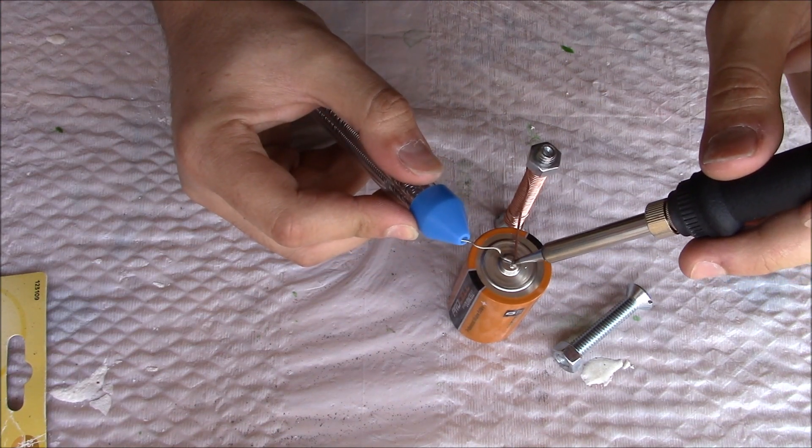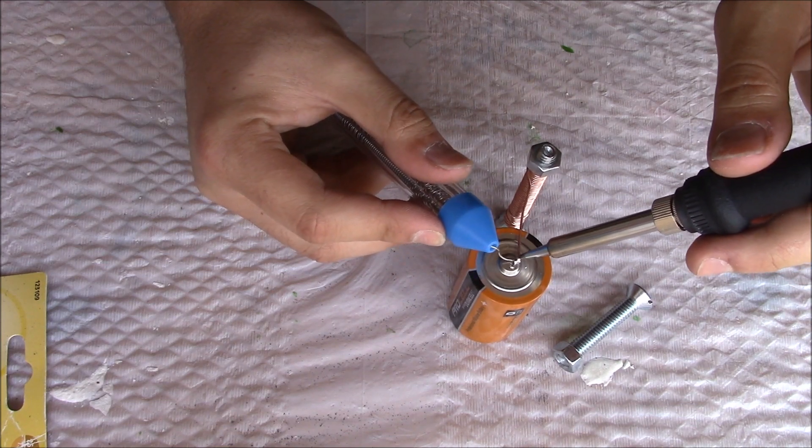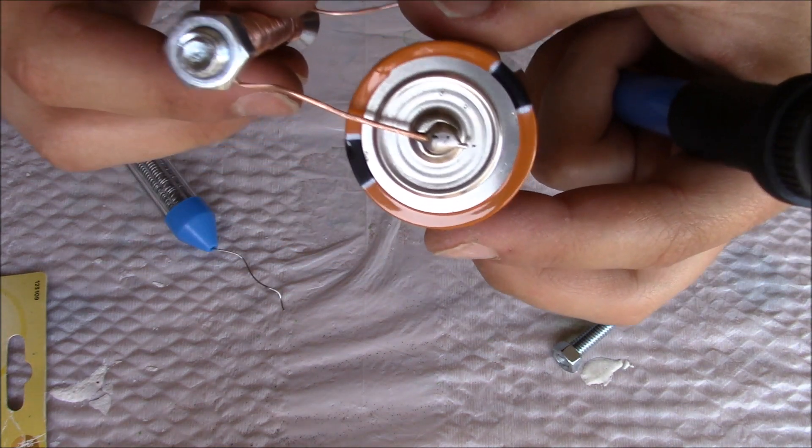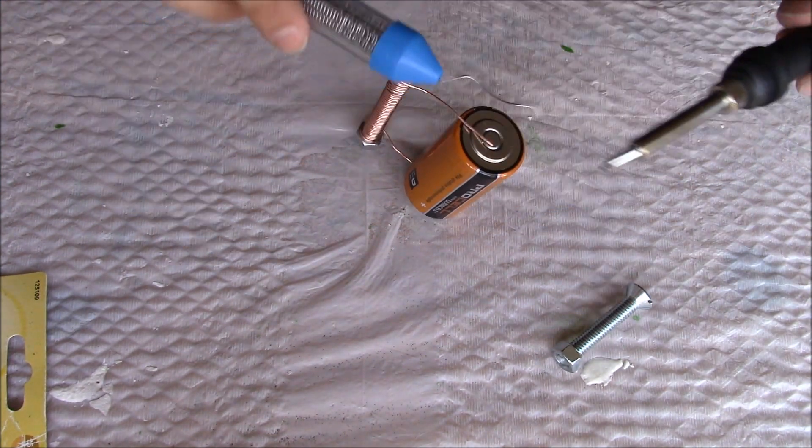Now we will solder both ends of the coil that we just made to both sides of the battery so we can get good conductivity. You want it to look just like that on the positive and the negative side.